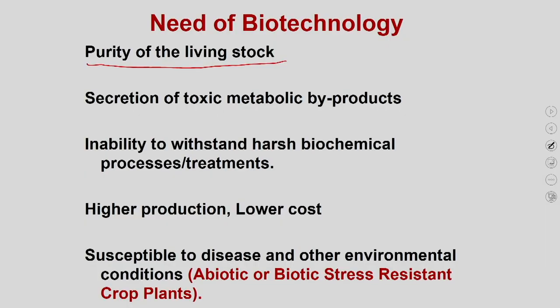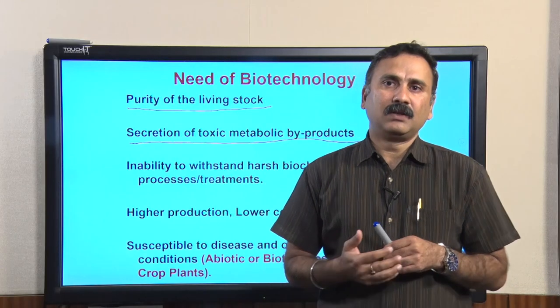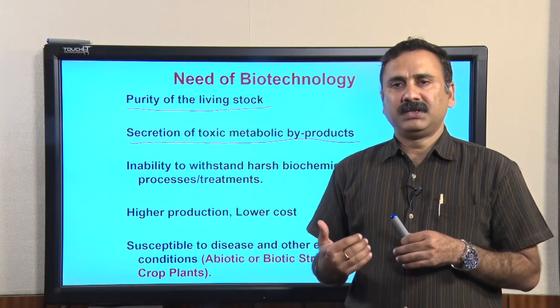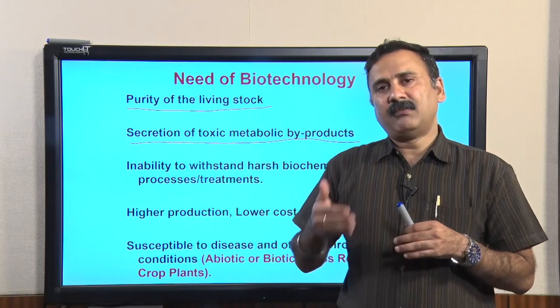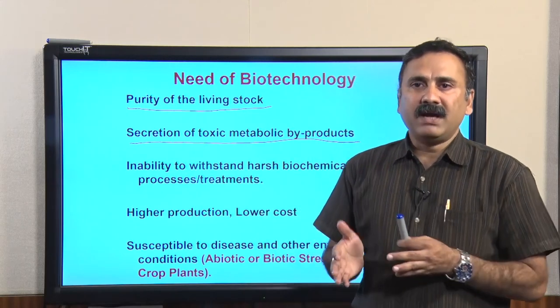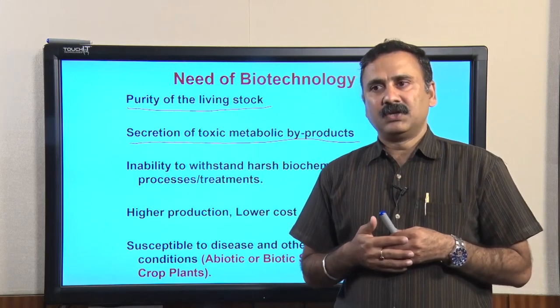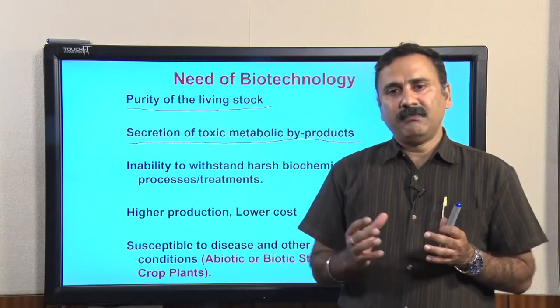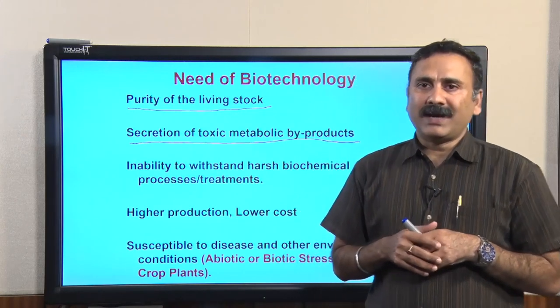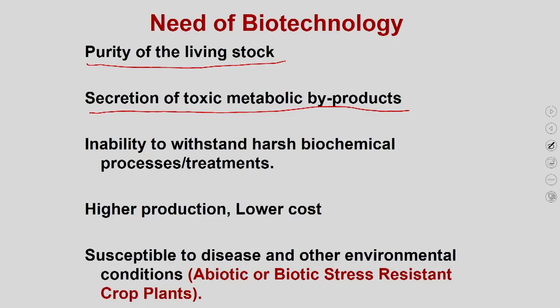Another aspect is the secretion of toxic metabolic byproducts. Many plants and microorganisms are sources of different metabolites or are used as sources for developing drugs. However, when they are used as a source of biotechnology-related products, they also have metabolic reactions producing byproducts, and sometimes these byproducts are toxic in nature. With biotechnology tools, you can increase the productivity of the desirable product and decrease the production of the toxic metabolic byproducts.